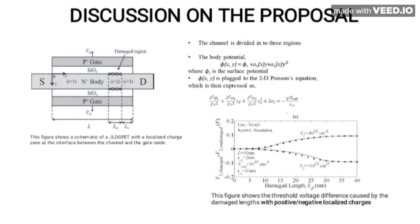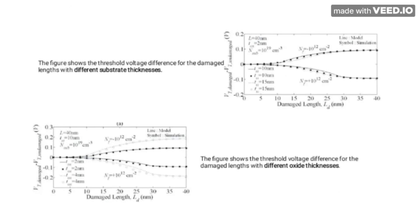The x-axis shows the threshold voltage difference for damaged length with different substrate thickness. The second graph shows the threshold voltage difference for damaged length with different oxide thickness. Both graphs show the threshold voltage difference between the damaged and undamaged cases.